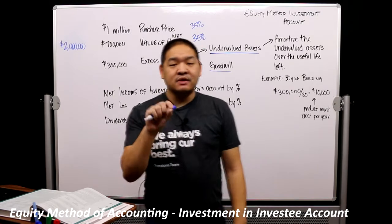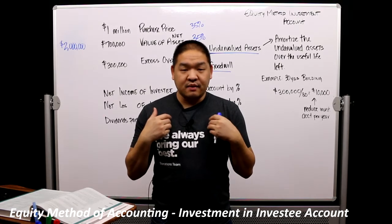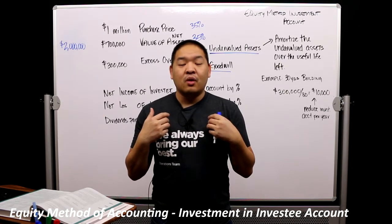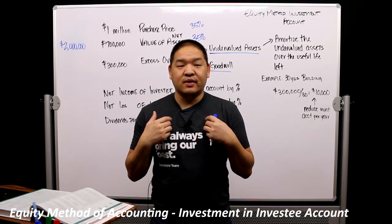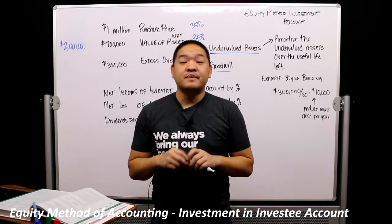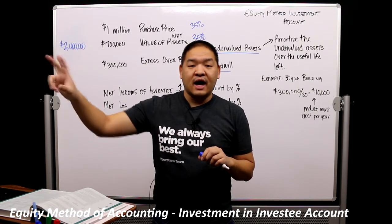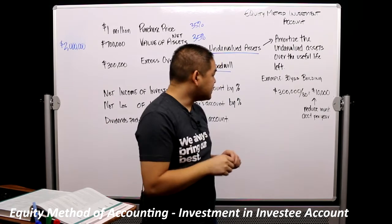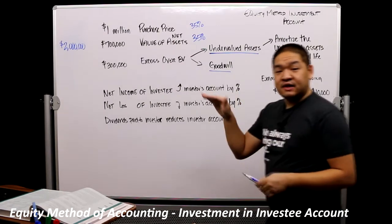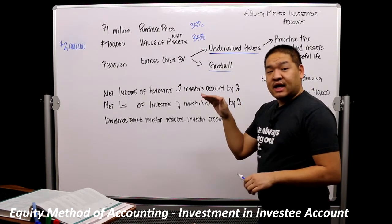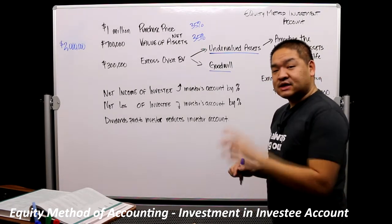Quick note: the reason why we're amortizing and not necessarily depreciating it is because we, as the big company that owns the 35% ownership, are going to amortize it on our books — not the books of company A. So really, we're doing an intangible amortization. We've got an intangible, and that intangible is the increased value of that asset that we don't directly own. So that $10,000 — we are going to reduce our investment in company A by $10,000 every single year for 30 years.